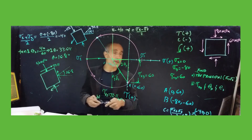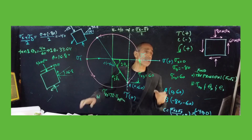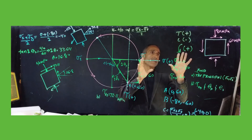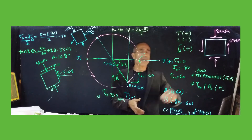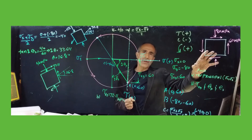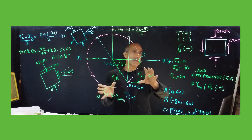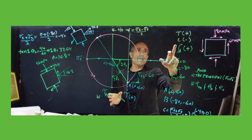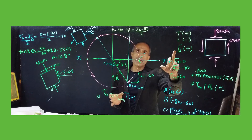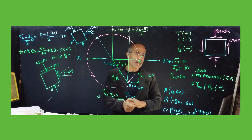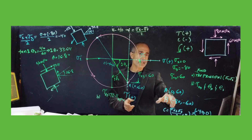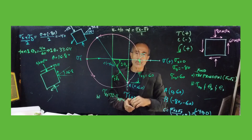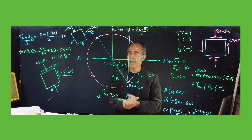The important thing is that when you have the stress element, that information gives you everything you need to draw the circle. Remember: tension is positive, compression is negative, and counterclockwise is positive. Once you have your coordinates, you can draw the circle and everything is easy from there.